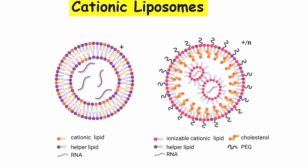Now, here comes the third category: cationic liposomes. These liposomes have positive charges on their surface, making them useful for delivering nucleic acids such as DNA and RNA into cells.